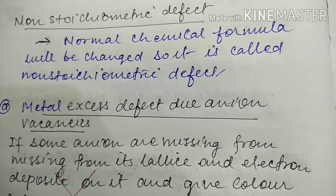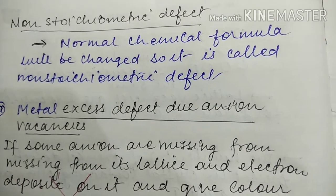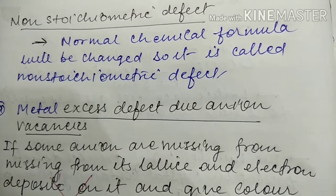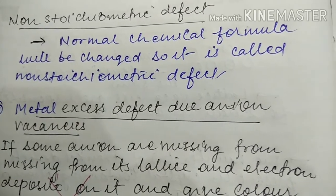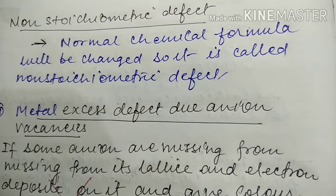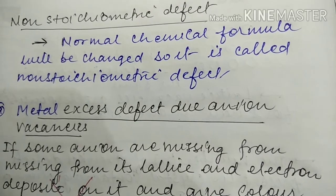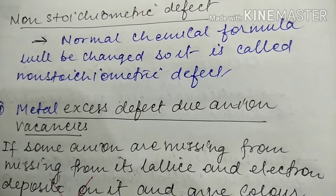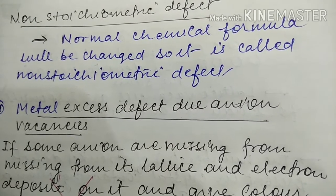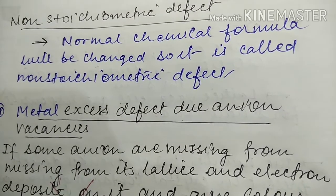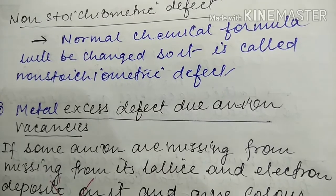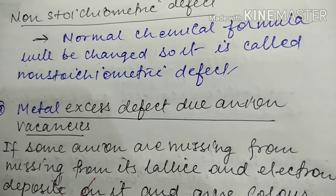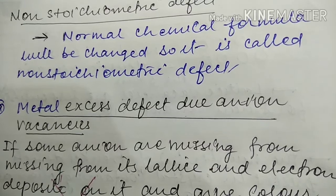Next is the non-stoichiometric defect. In stoichiometric defects, the chemical formula does not change — one cation and one anion gap occurs while electrical neutrality is maintained and the formula stays the same. But in a non-stoichiometric defect, the normal chemical formula changes, so it is called a non-stoichiometric defect.